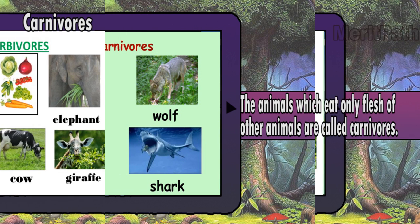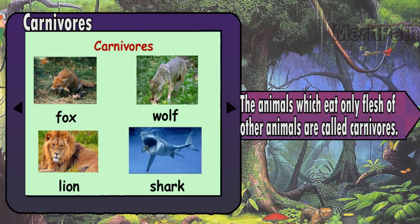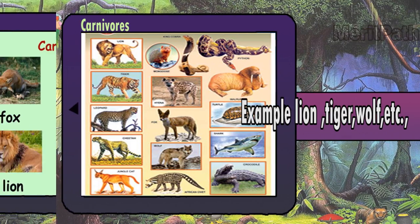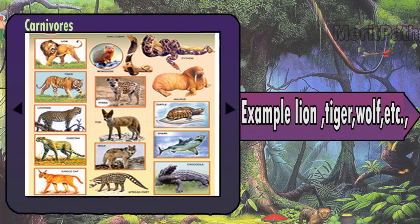Carnivores: the animals which eat only the flesh of other animals are called carnivores. Examples: lion, tiger, wolf, etc.